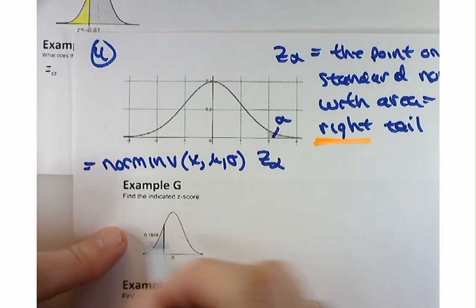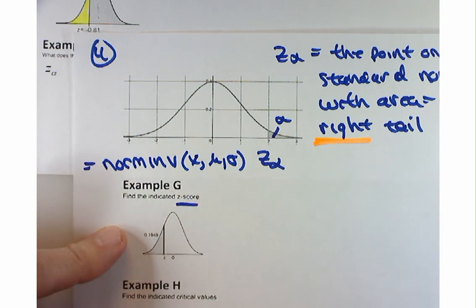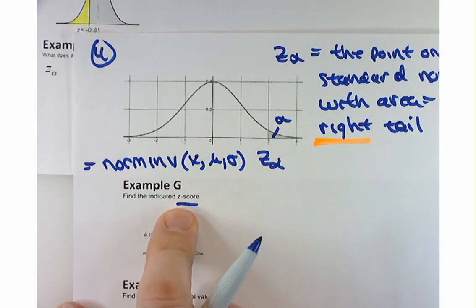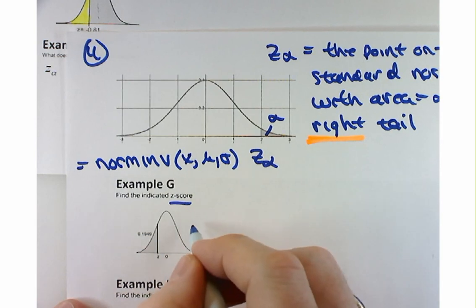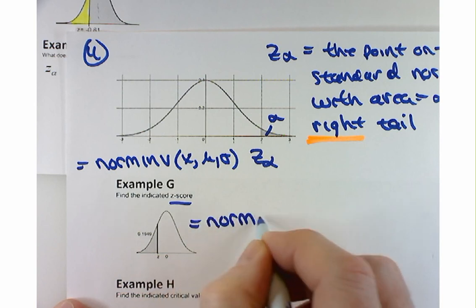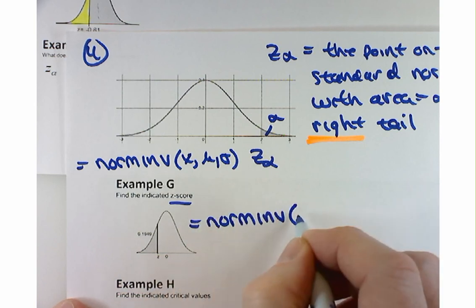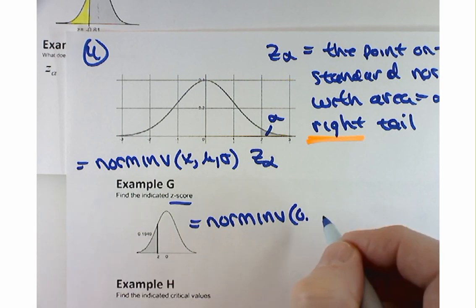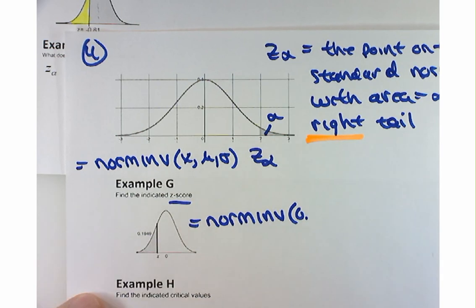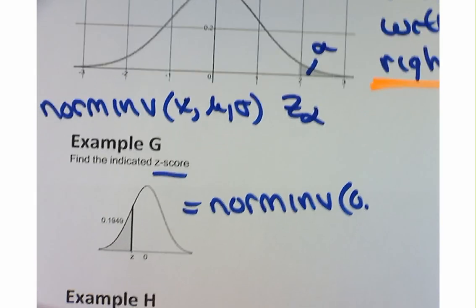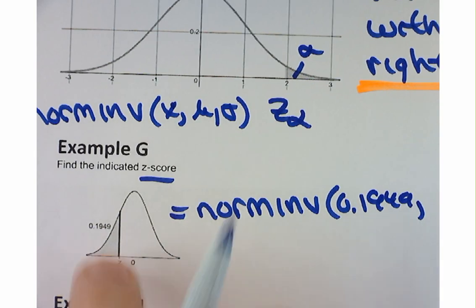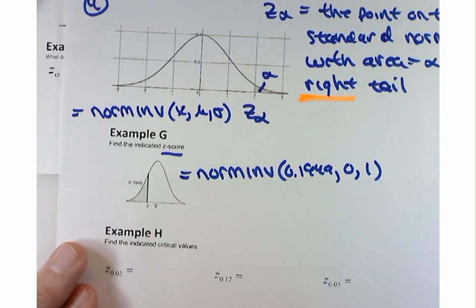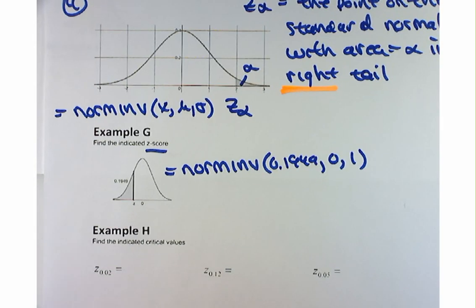In our case, if we're working with the standard normal curve — which is implied because we're working with a Z score — then what we would type in is: equals norm inverse of 0.1949, mean is 0, standard deviation is 1. So that's what we should type in. And let's see what Z value pops out.